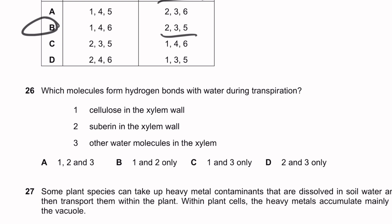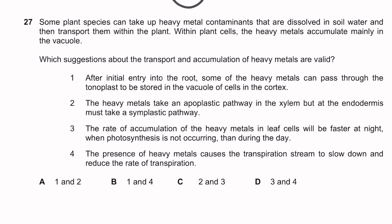Question twenty-six: which molecules form hydrogen bonds with water during transpiration? Cellulose in the xylem wall forms hydrogen bonds with water — yes. Suberin in the xylem wall — no. Other water molecules in xylem — yes, via cohesion (hydrogen bonds between water molecules). So the answer is cellulose in the xylem wall and other water molecules — options 1 and 3.